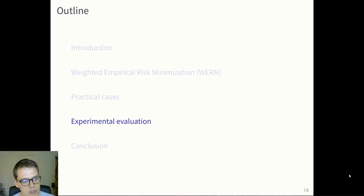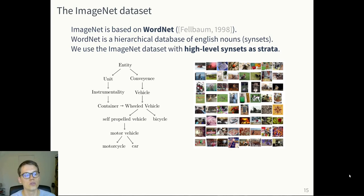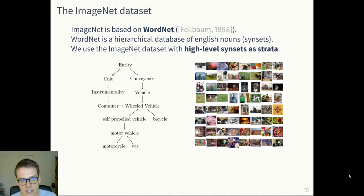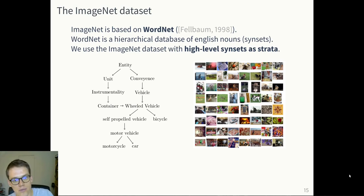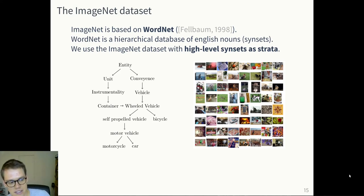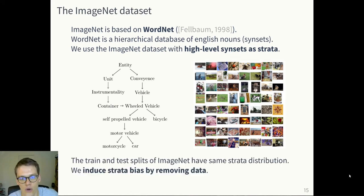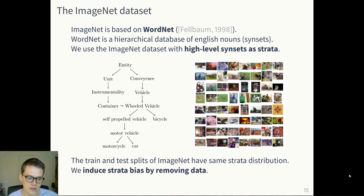Let's talk about the experimental evaluation. We worked with the ImageNet dataset, which is based on the WordNet hierarchical database of English nouns. We used high-level synset strata — for example, 'vehicle' as a high-level synset — and considered that we know the proportion of vehicles in training while the test distribution has a different proportion. We reweight so we can have an unbiased estimator of the test distribution. Since the train and test split of ImageNet have the same strata distribution, we induced bias by removing data.